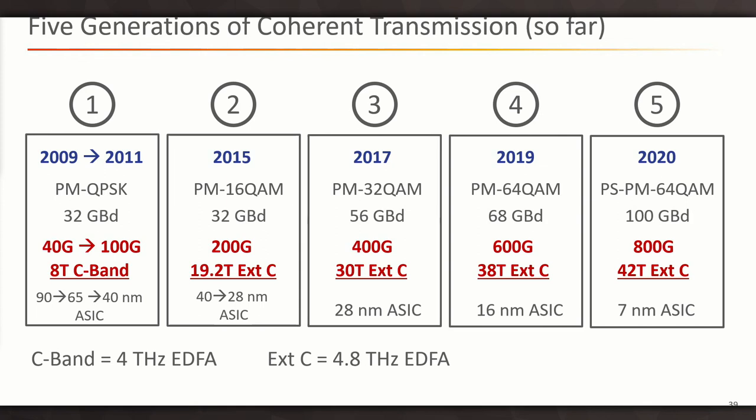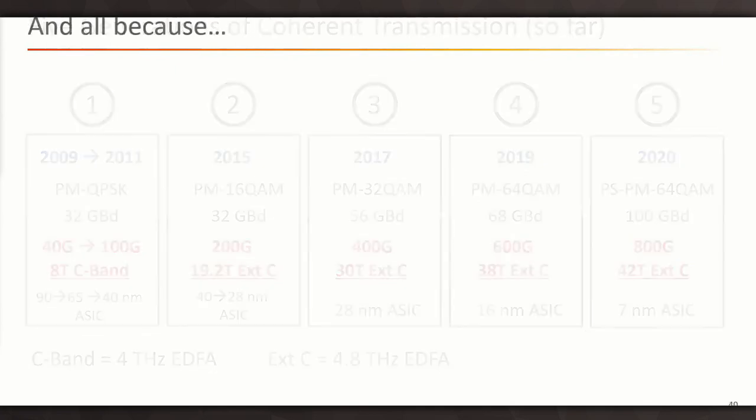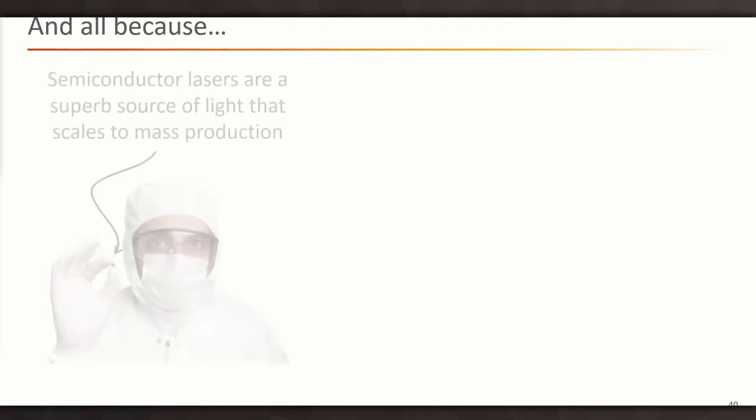And the other thing that we can do with coherent is that we can completely compensate for chromatic dispersion. So the irony is the best fiber for coherent transmission these days is good old G652. And if you happen to have SMF 28 ultra low loss, that's even better because it's a very low loss version of G652. And it's funny the way that fiber technology has now come full circle because that was the original kind of fiber deployed.